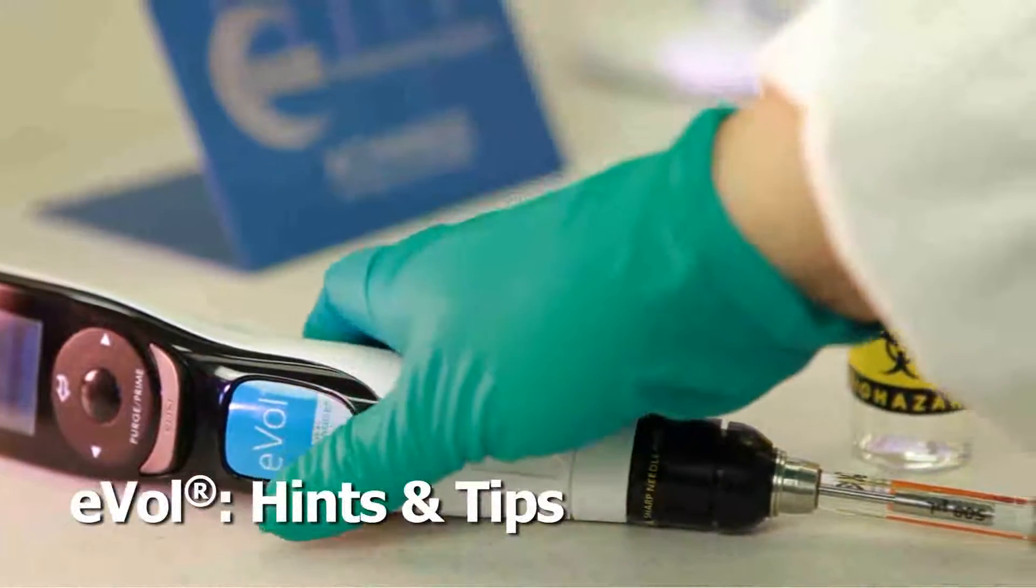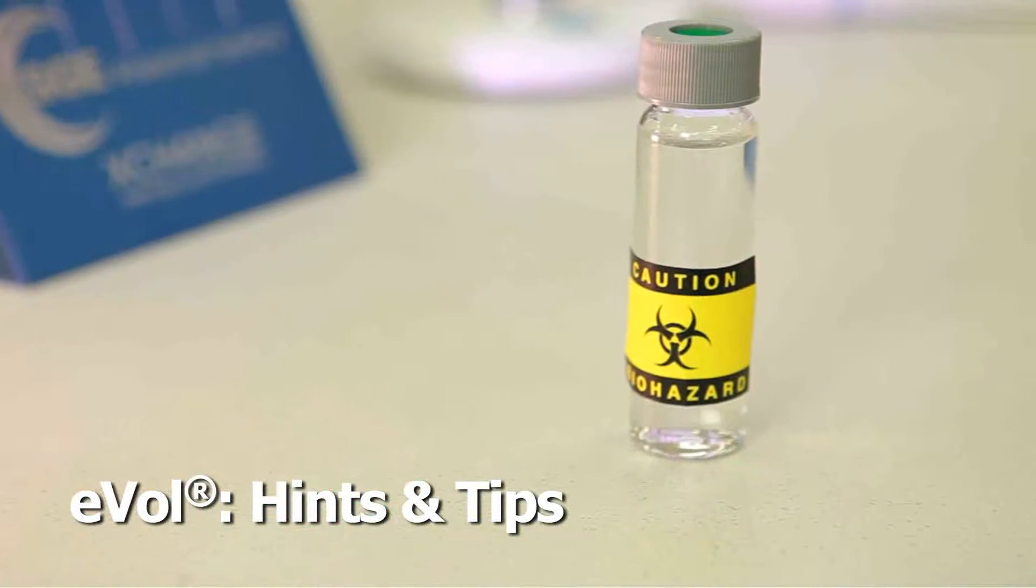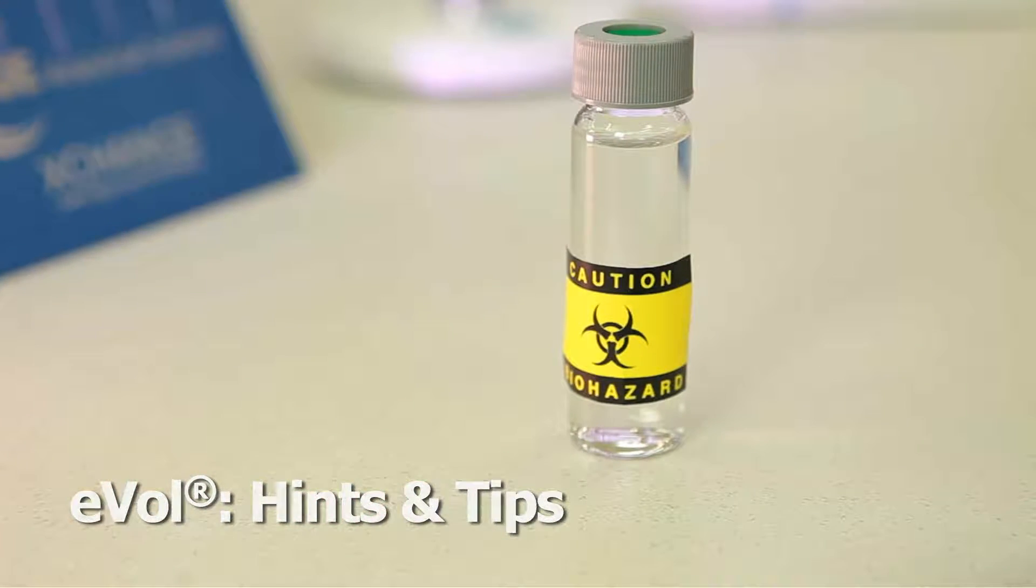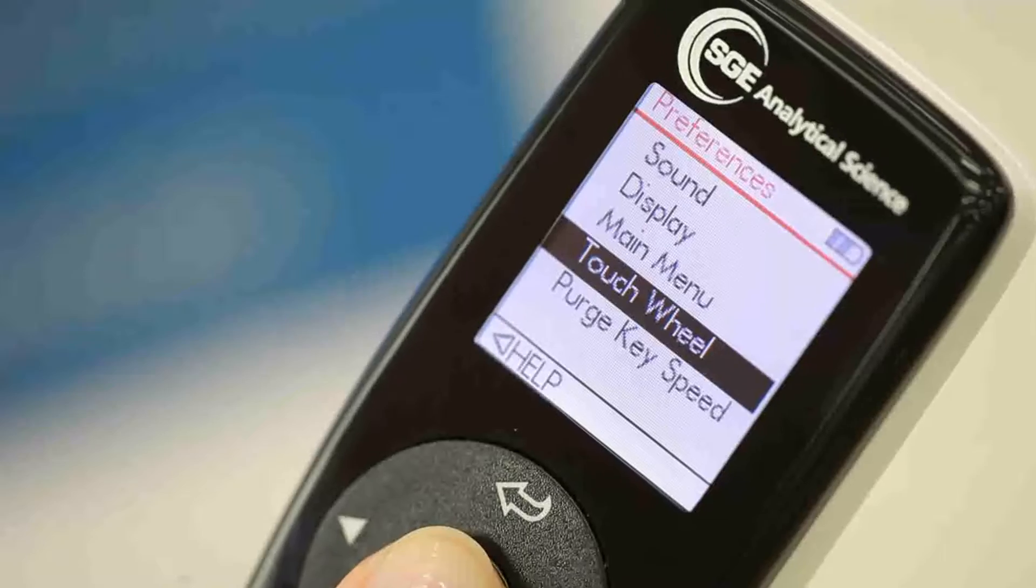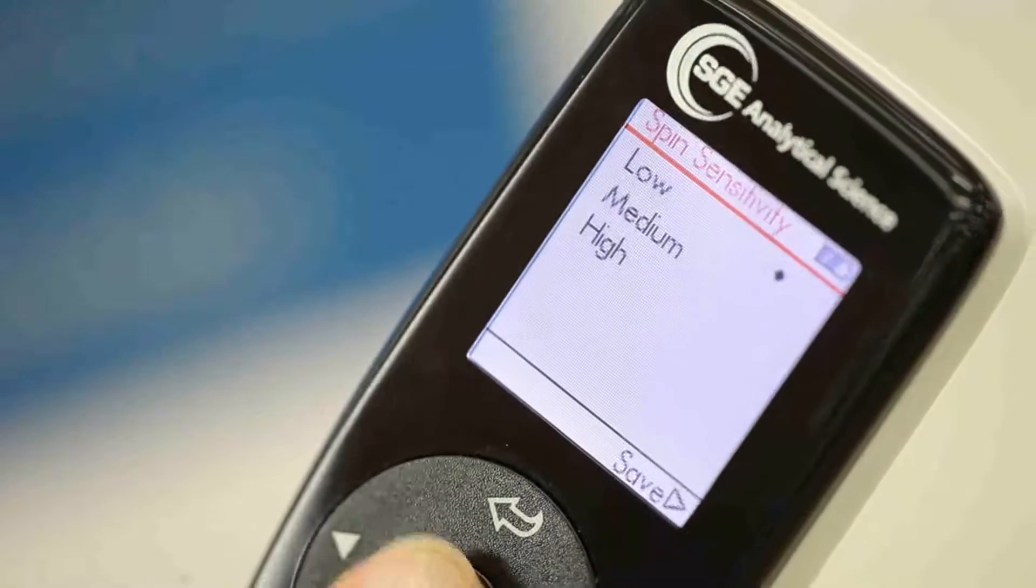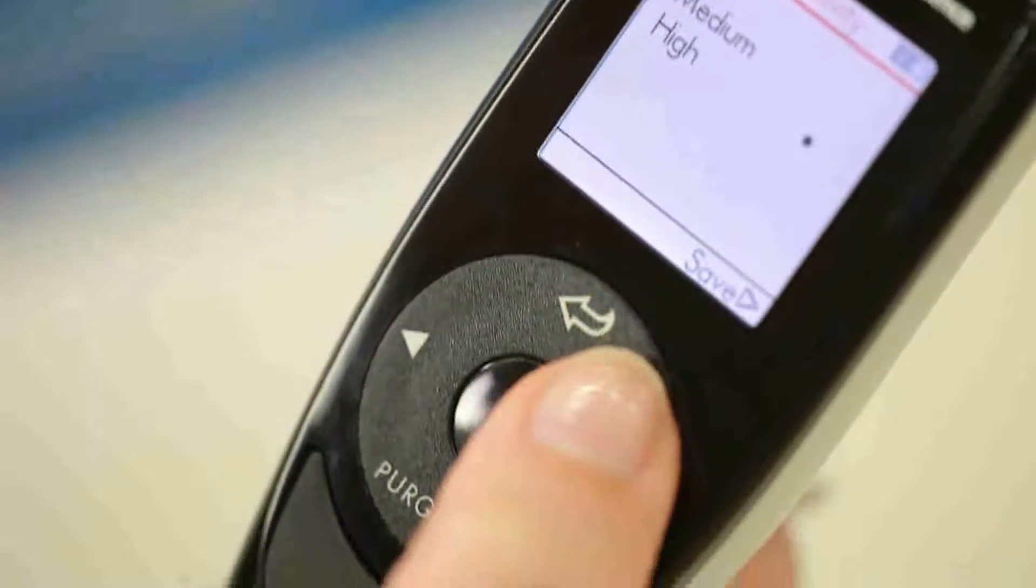EVOL can be used with any liquid, even with volatile materials such as organic solvents and hazardous liquids. When gloves are necessary, just select the toolbox option to adjust the touch wheel sensitivity.